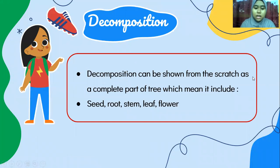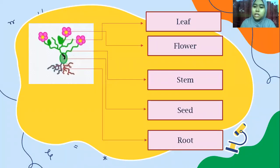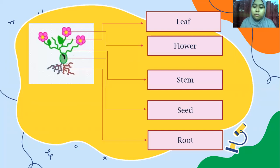I also used the decomposition skill to break big problems into small problems. This means I separated the parts of a tree into seed germination, root, stem, leaf, and flower, in order to show the main parts and features involved in the seed germination process.